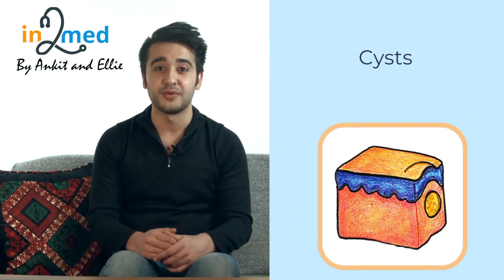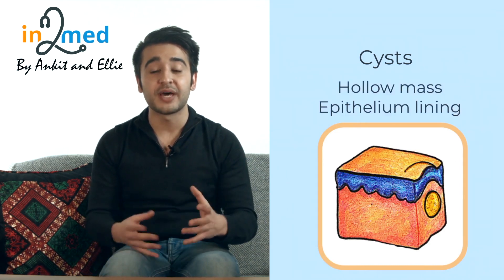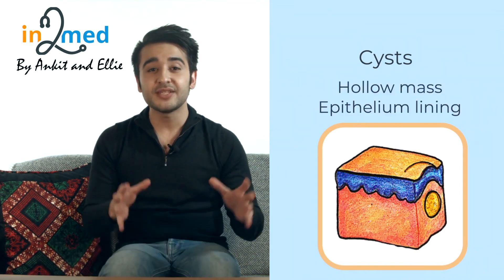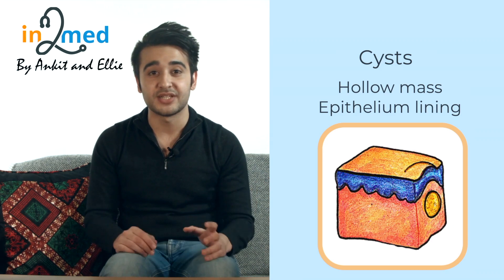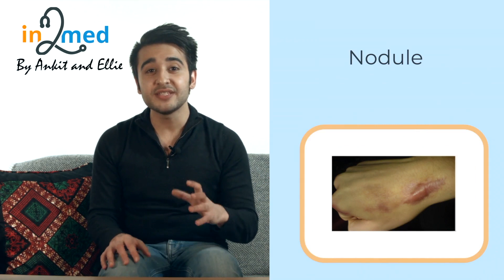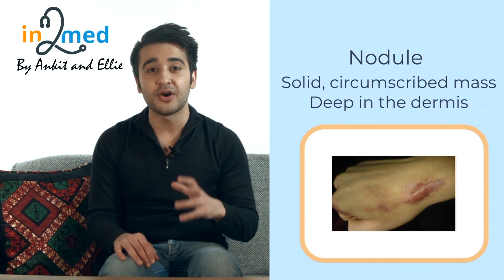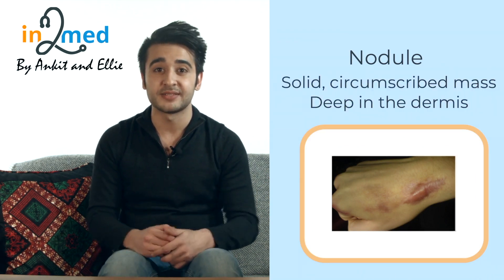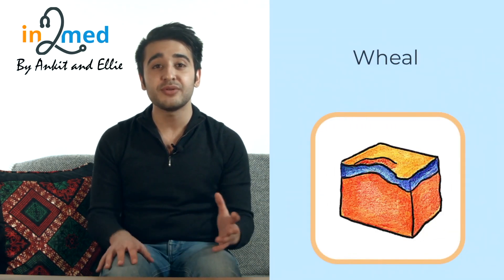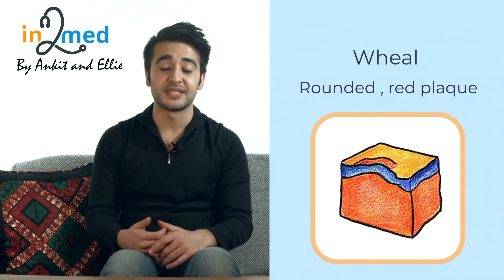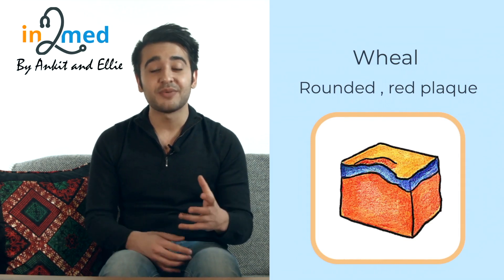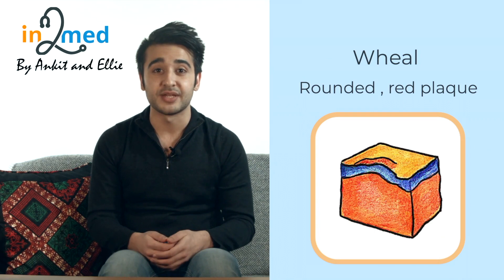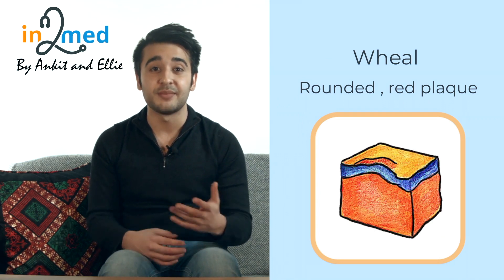The next key term is a cyst, which is a hollow mass surrounded by a complete epithelium lining. These are well demarcated from the adjacent tissue and can contain fluid. The next one is a nodule, which is very similar to a papule but often centred deeper in the dermis, and the size is less than 0.5 centimetres. The next is a wheal, which is a rounded red plaque that typically disappears in about 24 hours, part of the inflammatory response due to the release of histamine, and characterised by dermal oedema.